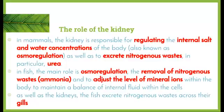In fish, the kidney also handles the removal of nitrogenous wastes — in this case ammonia — and adjusts the levels of mineral ions within the body to maintain a balance of internal fluid within the cells. As well as the kidneys, fish are also able to excrete nitrogenous wastes across their gills, so depending on whether they're in freshwater or saltwater, fish have that secondary organ they can use.